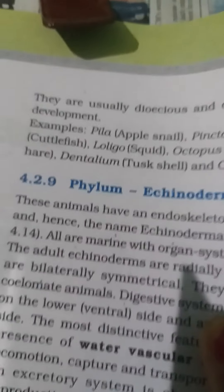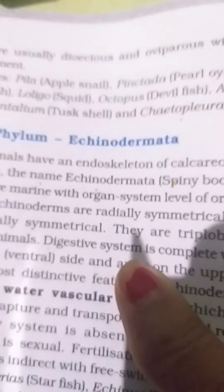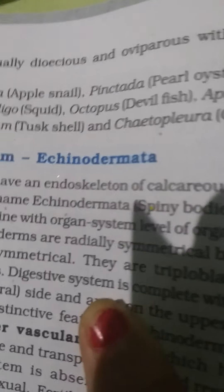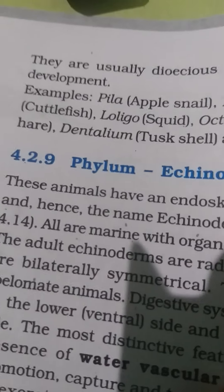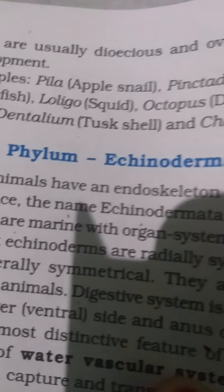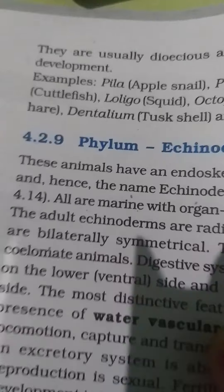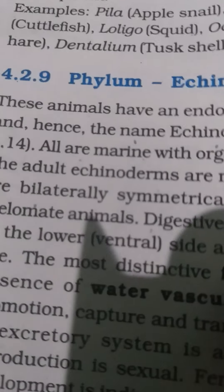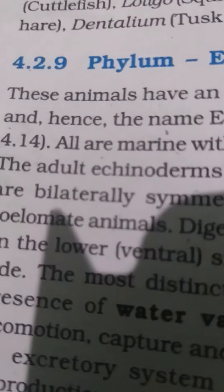Molluscs are dioecious, meaning sexes are separate. They are oviparous, meaning they lay eggs, with indirect development. Examples include Pila (apple snail), Sepia, Loligo (squid), and octopus.